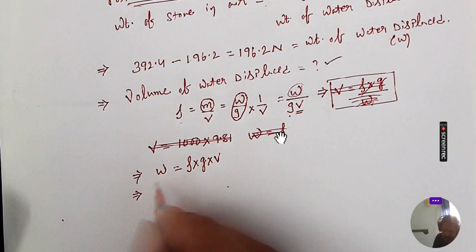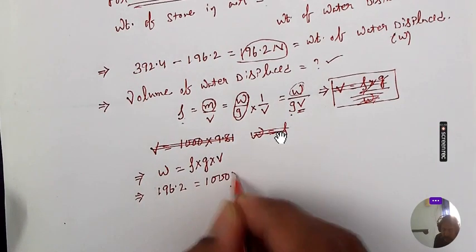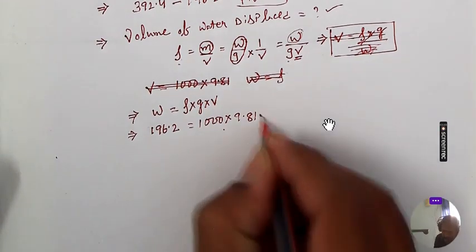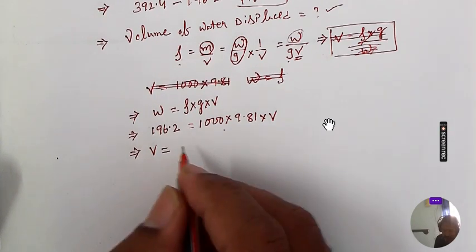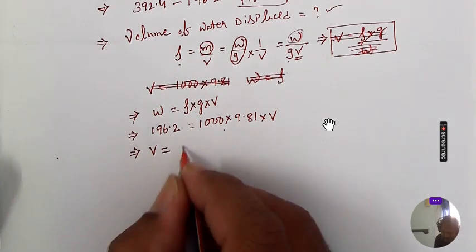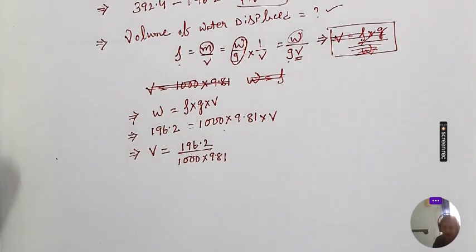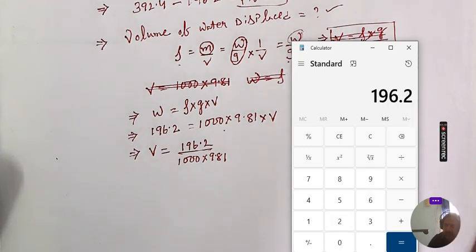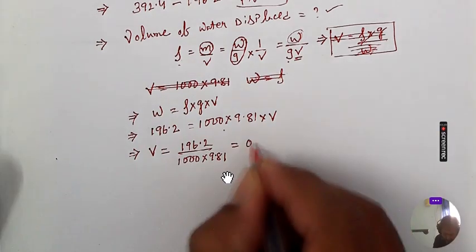The weight of the water displaced is 196.2 Newton. Setting this equal to rho of water (1000 kg/m³) times g (9.81), giving 9810. So 196.2 divided by 9810 gives a volume of 0.02 m³.